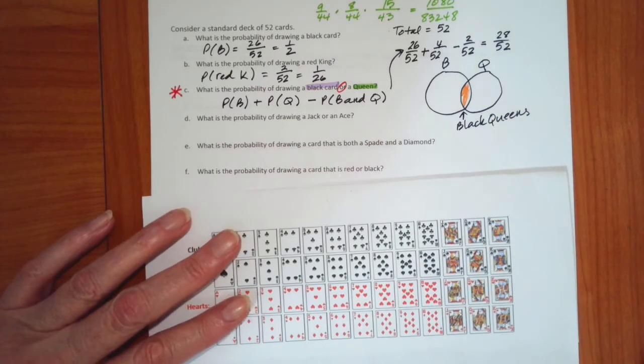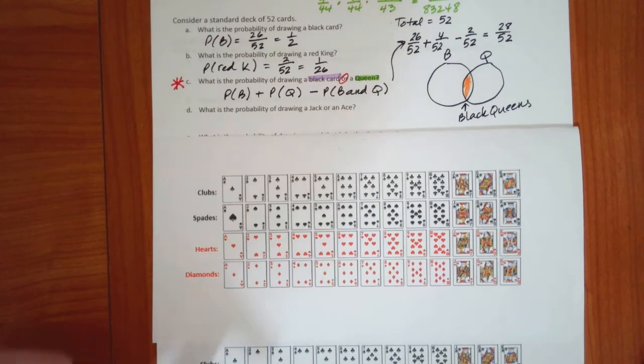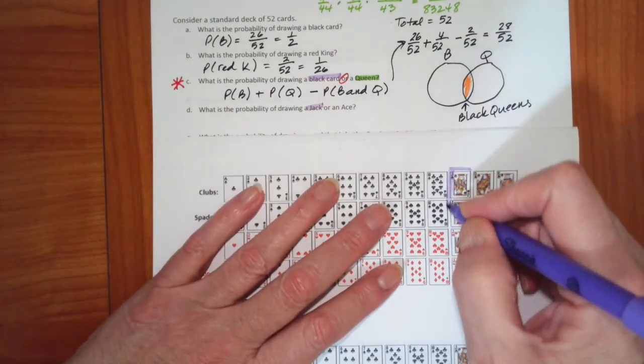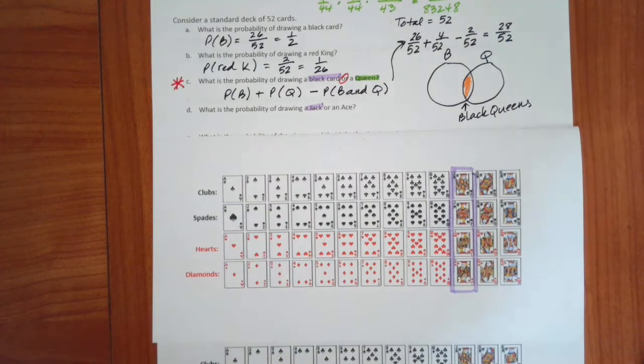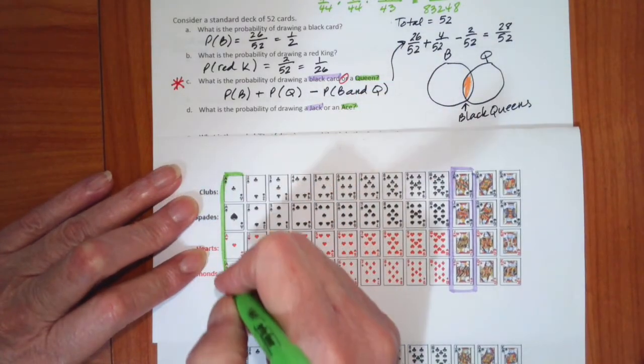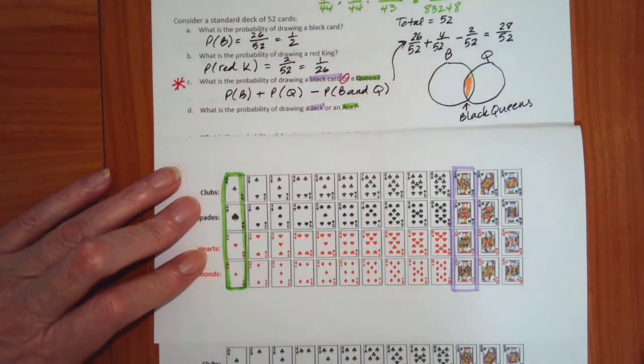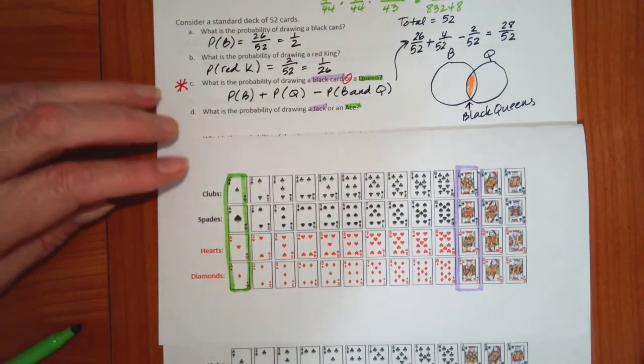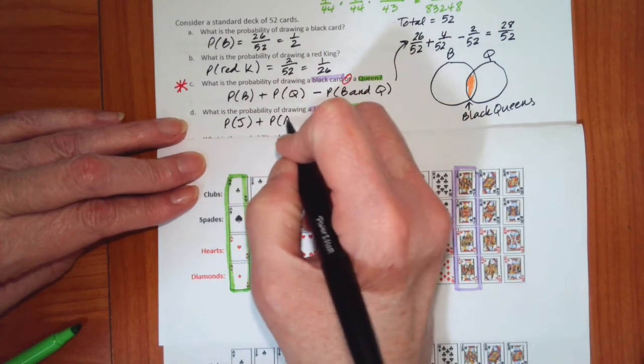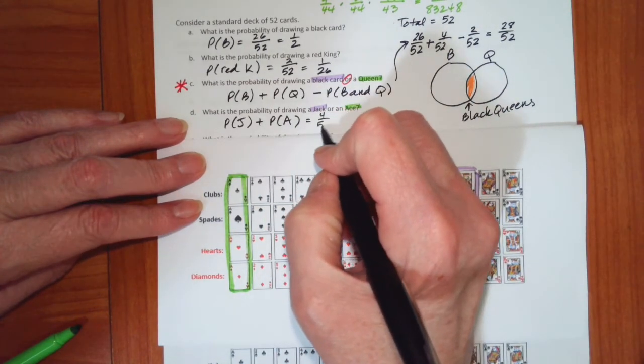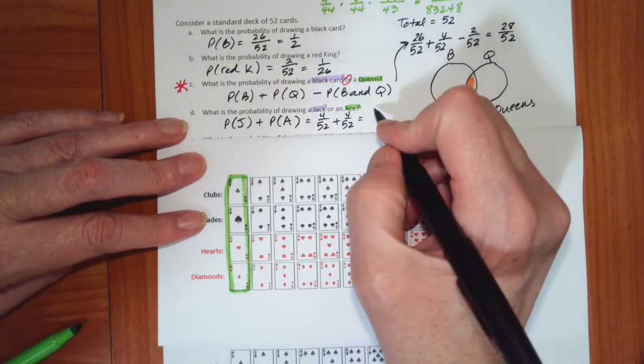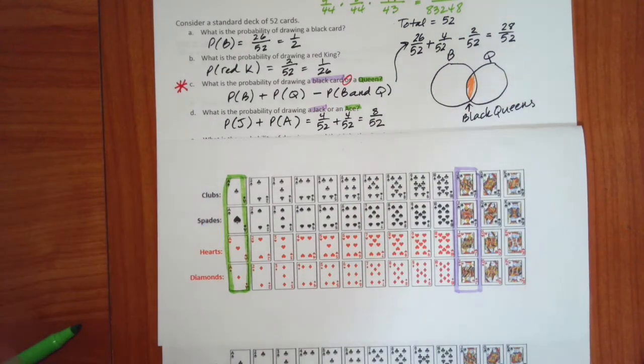So these are overlapping. Well, what is the probability of a jack or an ace? Once again, this is an or statement. A jack is right here. An ace is right here. These are not overlapping. So this is just going to be the probability of a jack plus the probability of an ace. Which is just the jacks, there are 4 out of 52. The ace, there are 4 out of 52. Remember, since my denominators are the same, I add the numerators. So this is 8 out of 52. And again, reduce or don't reduce.